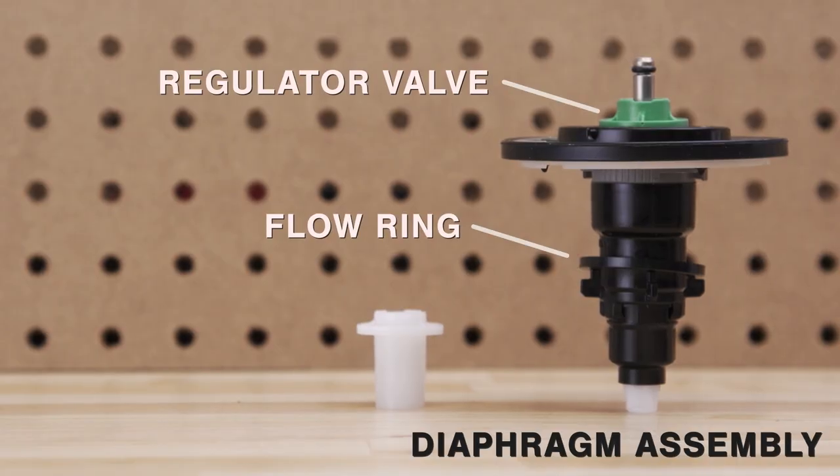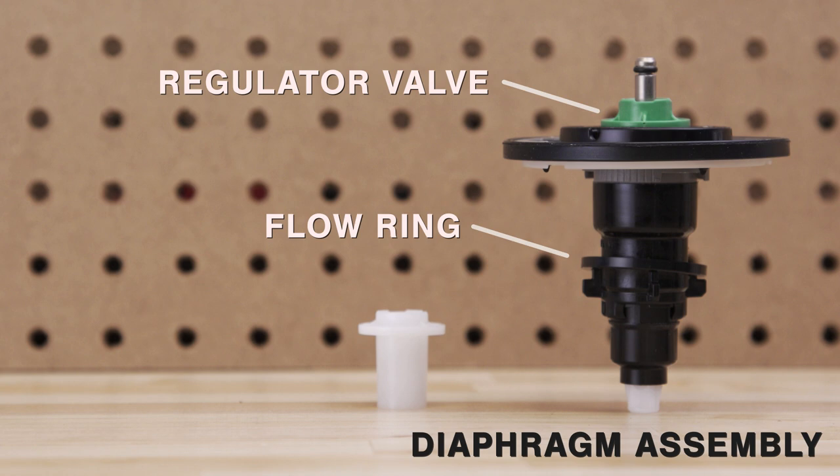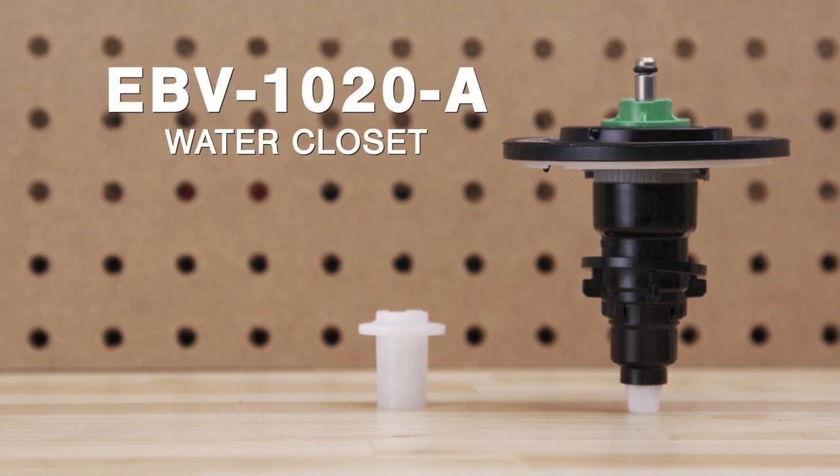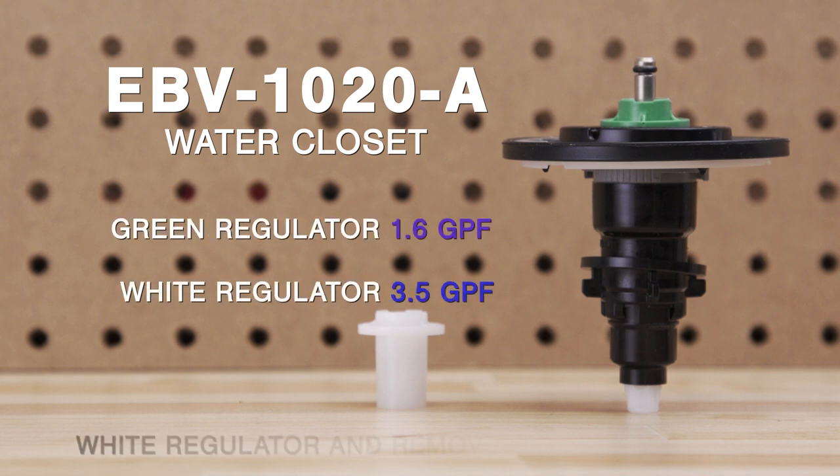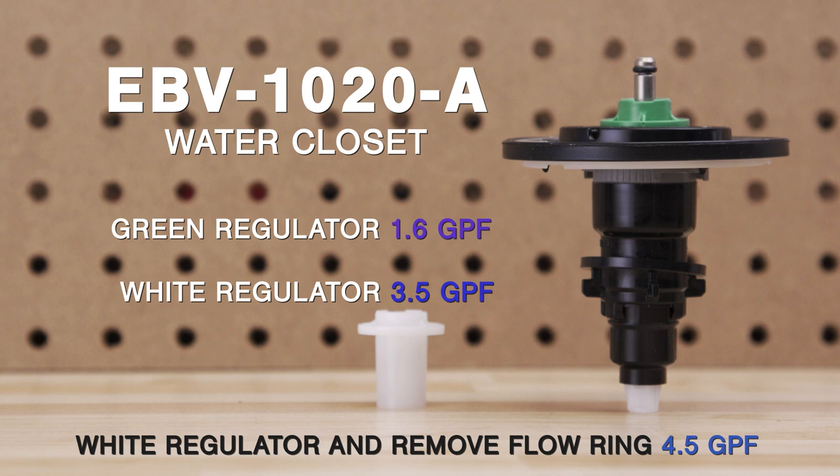The flush volume is controlled by both the flex tube diaphragm assembly and regulator. Regulators come in different heights and will change how much the diaphragm opens during each flush. White regulators create a higher flush volume. Green regulators create a lower flush volume and are commonly found in water-saving units.